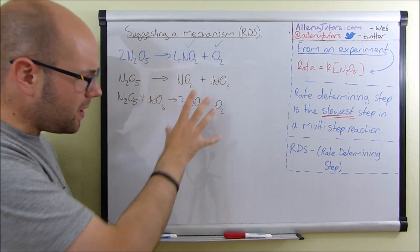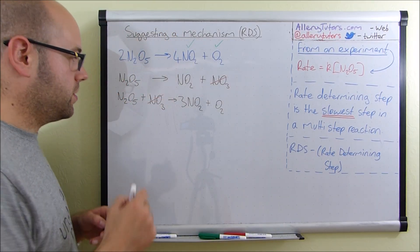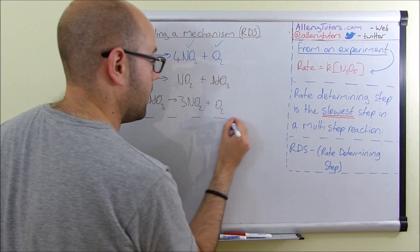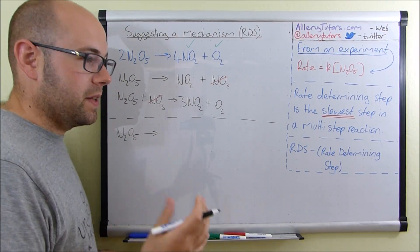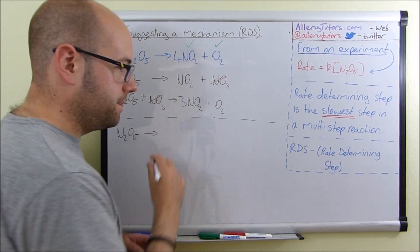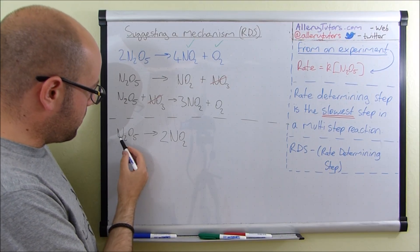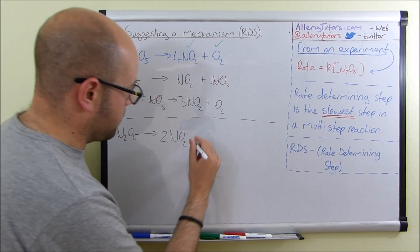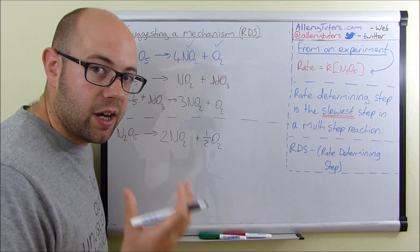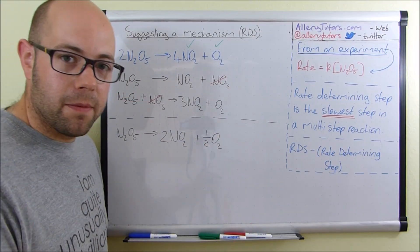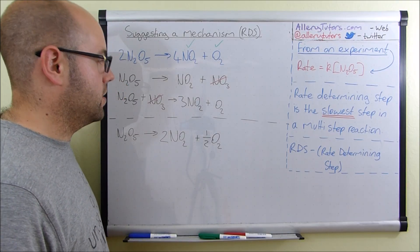Now I'm going to suggest another mechanism because you might have spotted another possibility. We start with the same overall reaction. Again we have N₂O₅, but this time the decomposition gives a slightly different product. This time we form 2NO₂. We've used up four oxygens and we have one oxygen left over, so we put ½O₂ there. This is another valid example of N₂O₅ decomposing, as long as the molecules add up on both sides and you're not just making up molecules.